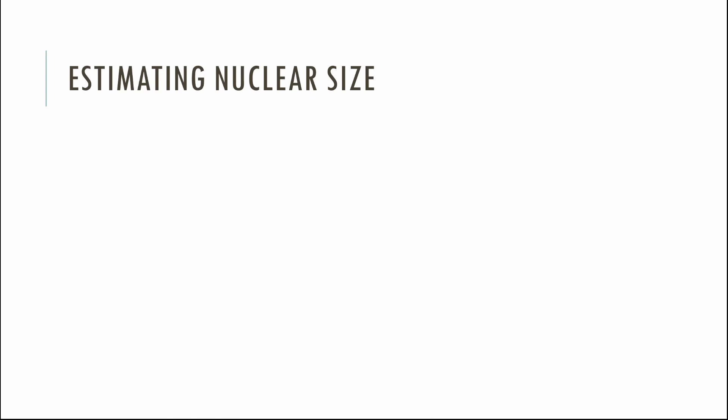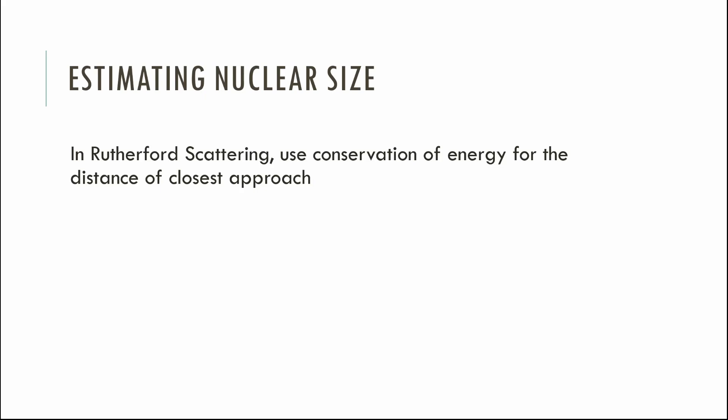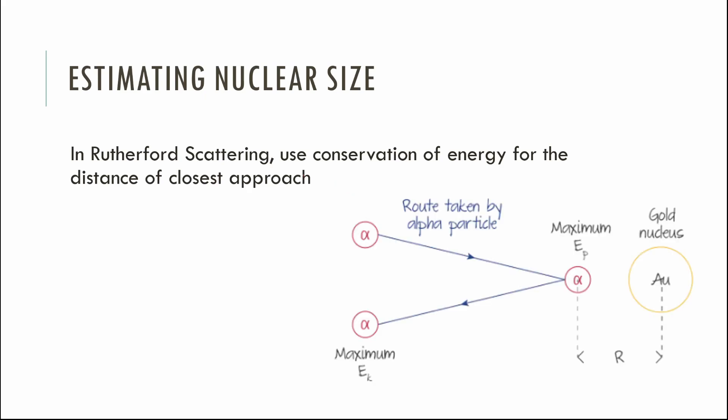That recap of Rutherford scattering covers one of the big methods we can use to figure out how big the nucleus is. There are three methods for measuring the size of the nucleus, and we're going to talk about them in terms of increasing effectiveness. The first one is a rough guess — a very simple conservation of energy problem that the IB asks you to do a lot.